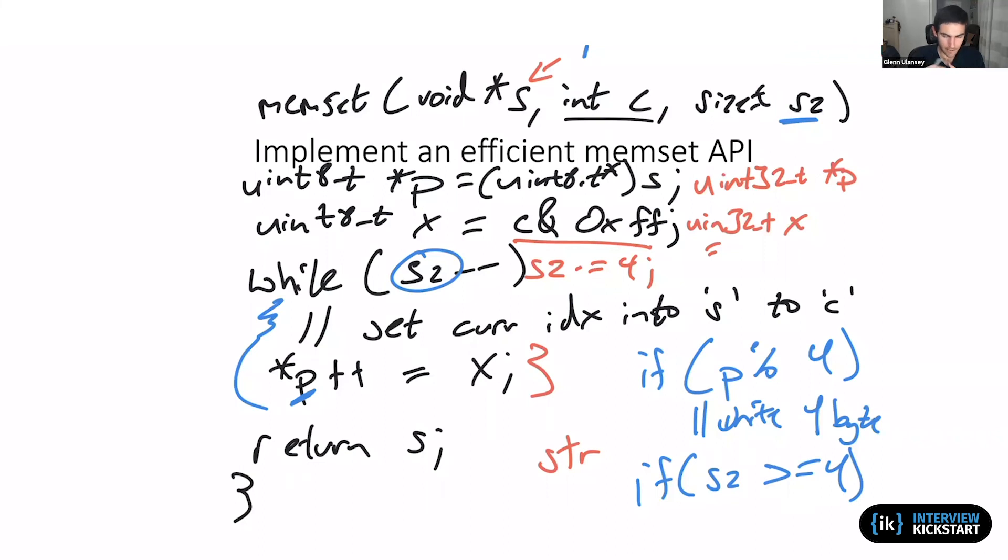So I think, I forget who pointed out initially, but doing things on a word basis, however big a word happens to be, is a fantastic optimization. But we need to keep in mind those edge cases of the unaligned start and the unaligned end to make sure that we don't treat ourselves in the front.